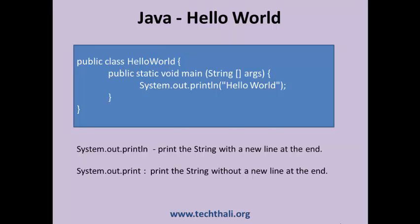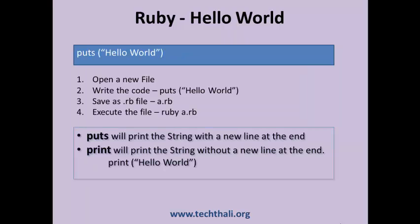Let us now see how this hello world program can be written in Ruby. Create a new file and write the code puts 'hello world'. Save the file with a name, say a.rb. Execute the file using the command ruby a.rb.